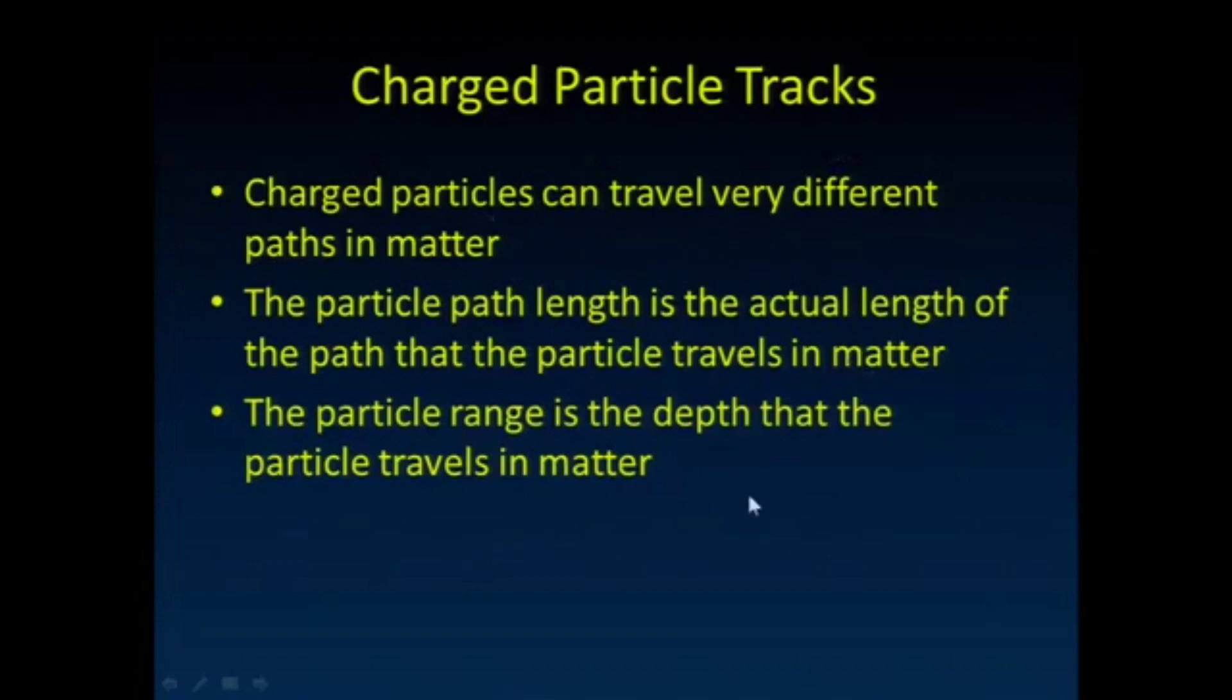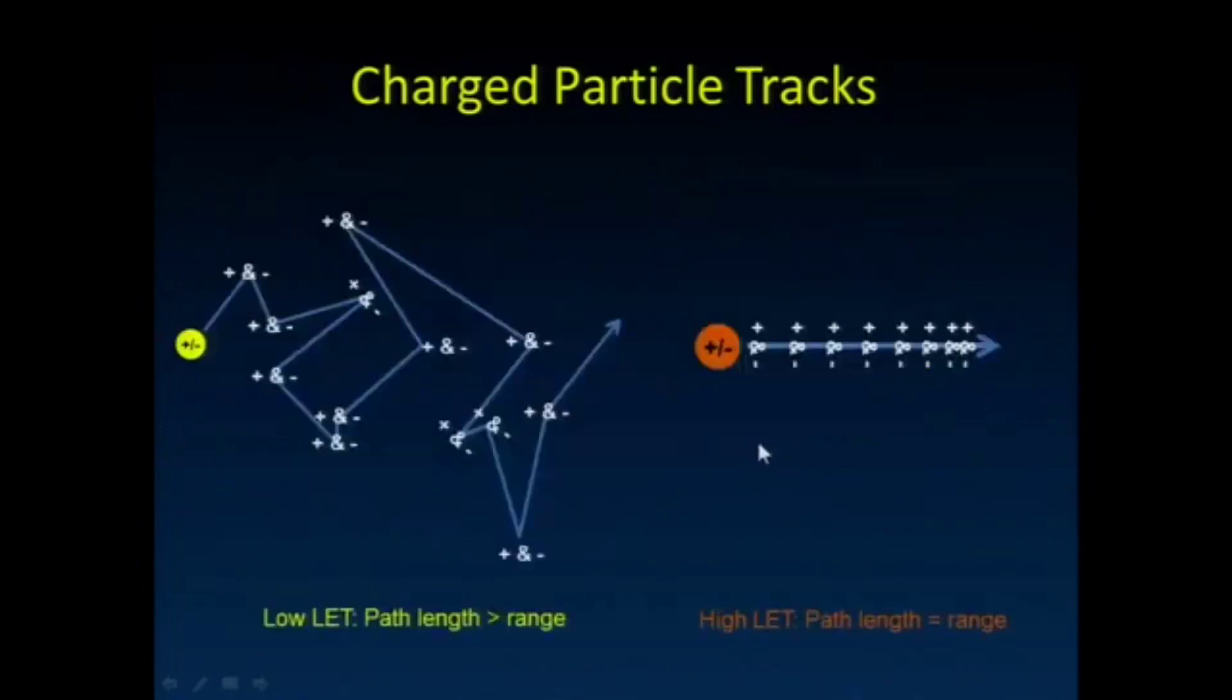They travel very different paths in matter. So the particle path length is the actual length of the path that it travels, and the range is the depth that it travels. So here's the picture I showed you before. So notice this low LET radiation, so this could be an electron—it just bounces around, and it has a very long path length, but its range is quite a bit shorter than that. While high LET radiation, really its path length and its range are about the same. It's that Mack truck when it starts to hit cars on the highway—they all move out of its way. It continues on its path, if you will.